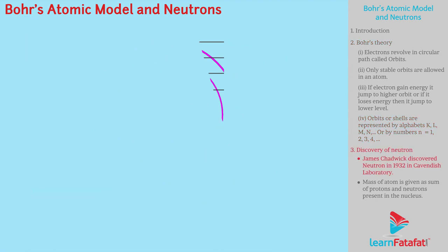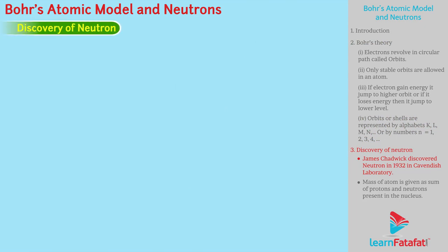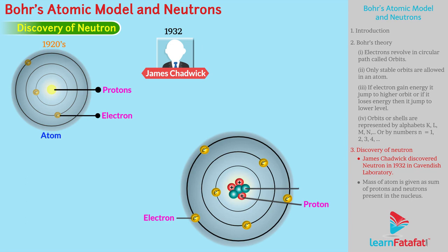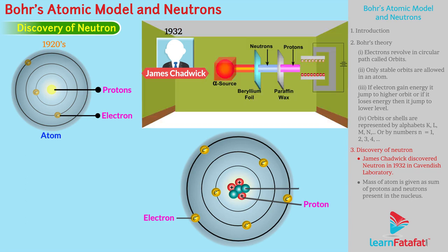Before continuing, it is important to know the discovery of the neutron. Around the 1920s, it was believed that the atom is composed of protons and electrons. In 1932, James Chadwick discovered another subatomic particle while experimenting in the Cavendish laboratory. This particle was named the neutron.